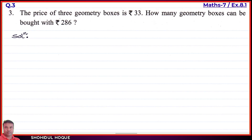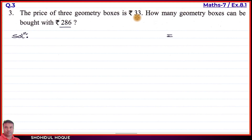We write the equation on the right side with the equal symbol. With rupees 33, three geometry boxes can be bought. Now we find the value for one rupee using the unitary method.